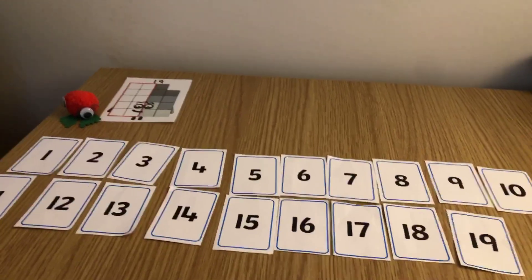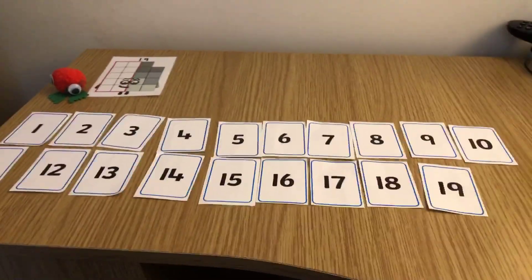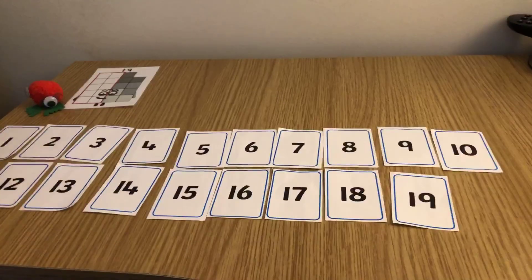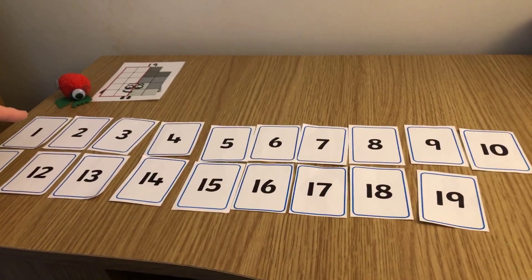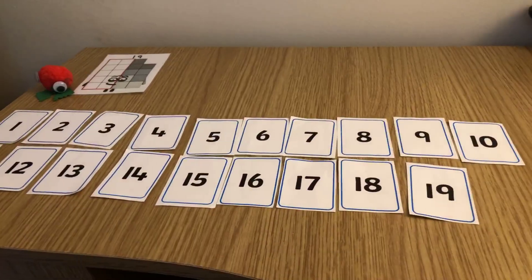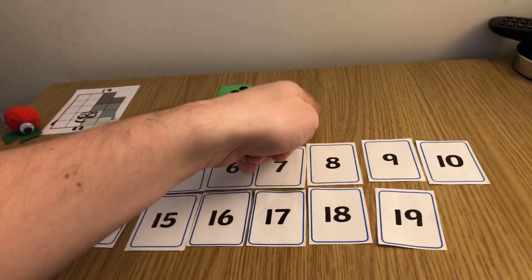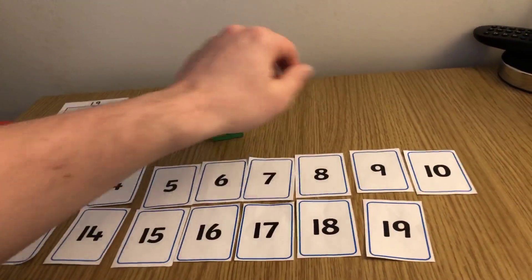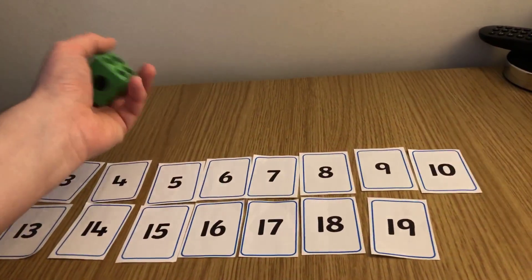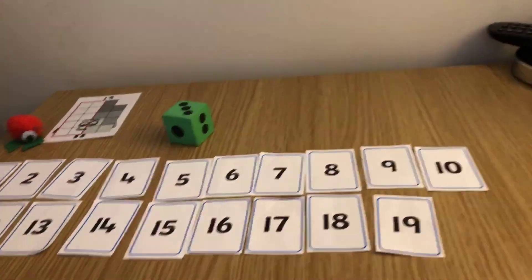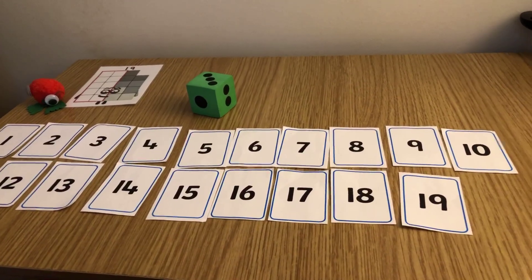Right, you could have a go at playing that game a few times with your family. Maybe you could go taking away and then when you get back to the beginning of the numbers then do adding. Or you could make something that had add and take away on it and maybe spin it or roll it so you had to roll the dice and then the other thing told you to add or take away. Up to you.